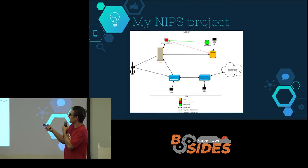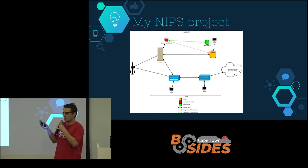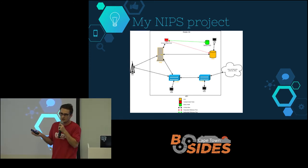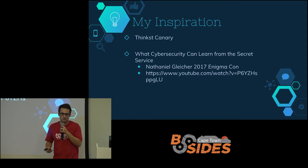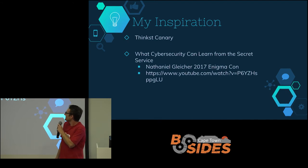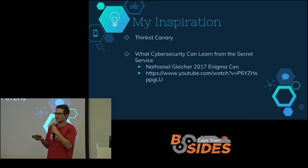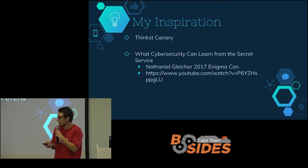Once a malicious flow is detected, the system quickly deploys a new decoy Docker container version of the main database and redirects all flows to it. This allows the whole network to carry on functioning while quarantining the compromised node. I had some inspiration from Thinkst Canaries — shameless self plug — and there's a great talk from Nathan Gilmore at the 2017 Enigma conference discussing how cybersecurity can learn from the Secret Service and the strict control rules that lead to better alerting and better outcomes for blue teams on networks.